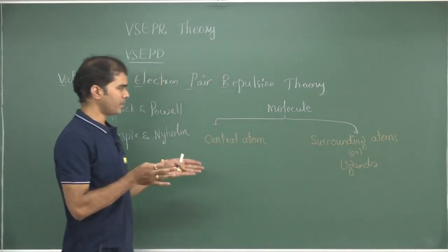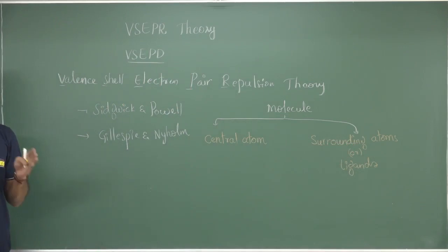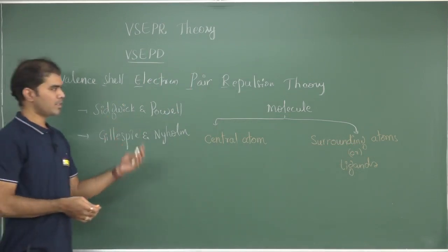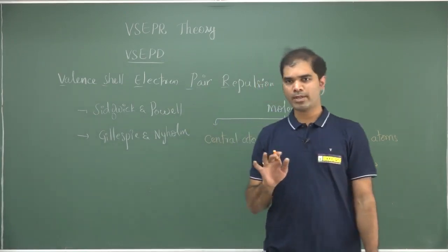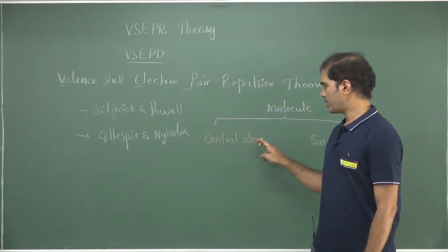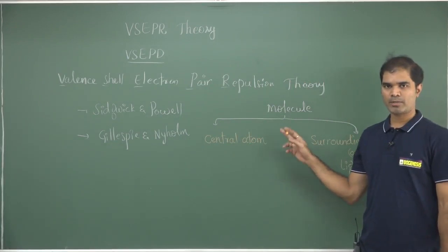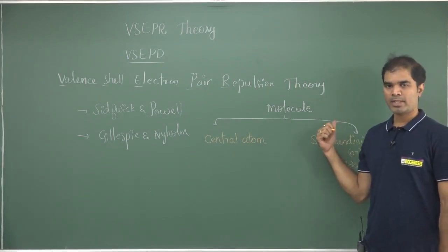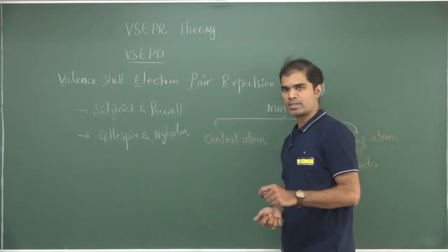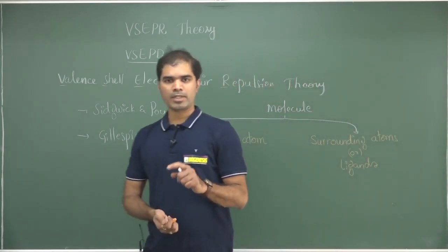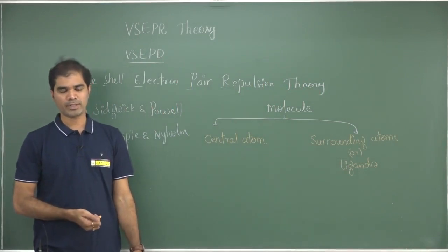So we have put the atoms of a molecule into two types: the central atom and the surrounding atoms. This is a theory that concentrates mostly on the central atom — what are its valence electrons, how they are bonded to the surrounding atoms, and after bonding, are there any electrons left out? Depending on the electrons that are left out, that could also decide the geometry of a given molecule.